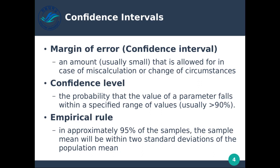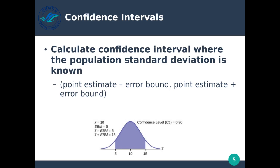The empirical rule: in approximately 95% of the samples, the sample mean will be within two standard deviations of the population mean. This should also look familiar — it's essentially the normal distribution. So in approximately 95% of the samples, the sample mean will be within two standard deviations of the population mean.